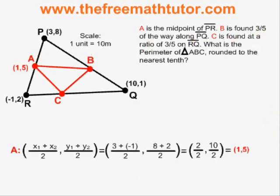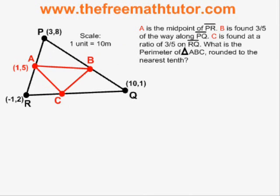Now it's time to move on to the next step, which is to find point B. To find point B, I use the ratio formula. Since B is three-fifths of the way along PQ, that means it is found at a three to two ratio between P and Q. My A is three and my B is two.